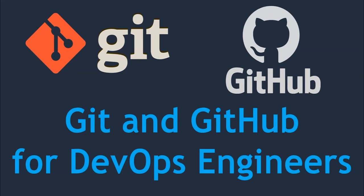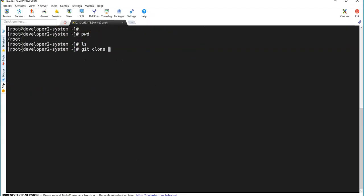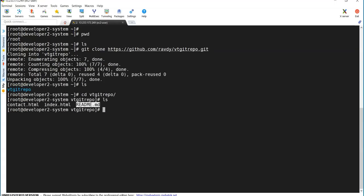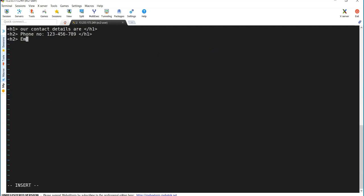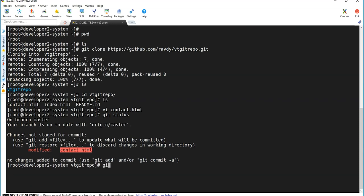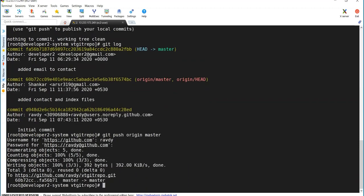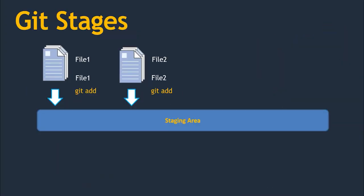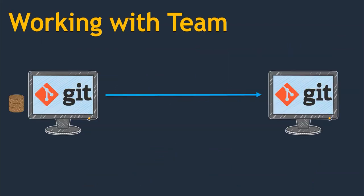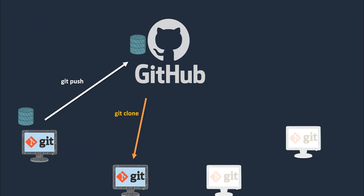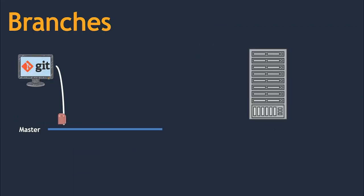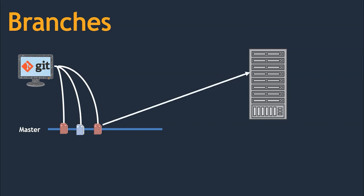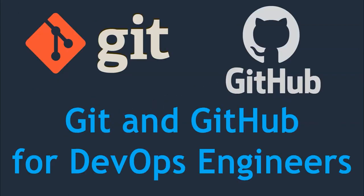Welcome to my new course: Git and GitHub for DevOps Engineers. This course talks about Git and GitHub from the DevOps engineer perspective — how it works in the DevOps process, from creating a repository to releasing code to production. I spent most of the time on hands-on labs rather than theory. In the last section, I discuss a real-time project to explain how to start working on a DevOps project, giving enough confidence to start with real-time work.